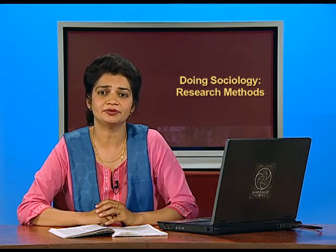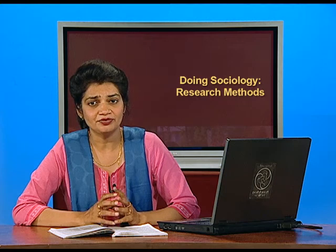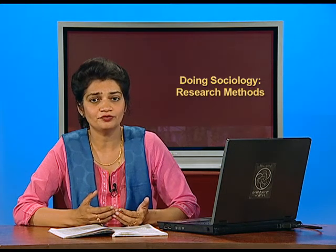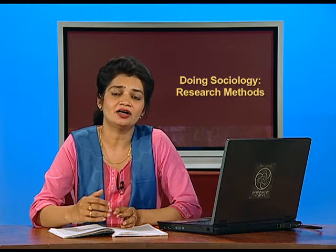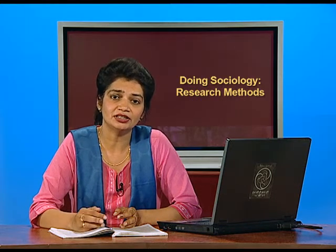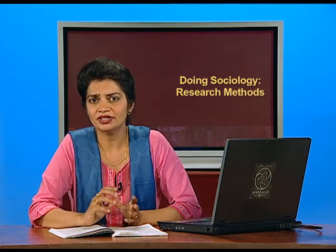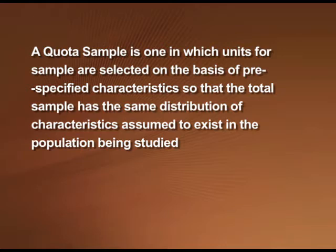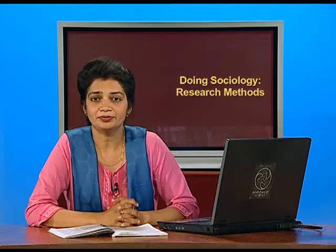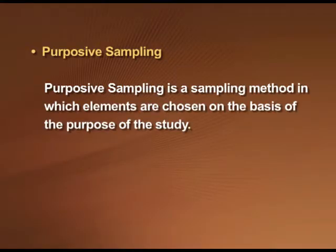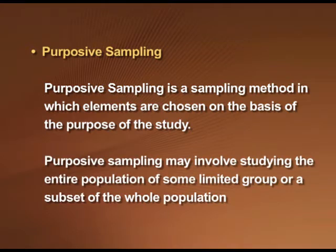A snowball sample is another example of non-probability sampling. The researcher collects data on a few members of the target population they can contact, then asks those individuals to provide information about other members of that group whom they know, and then contacts those other people. A quota sample selects units on the basis of pre-specified characteristics so that the total sample has the same distribution of characteristics assumed to exist in the population being studied. Finally, purposive sampling is a method in which elements are chosen on the basis of the purpose of the study, and may involve studying the entire population of some limited group or a subset of the whole population.